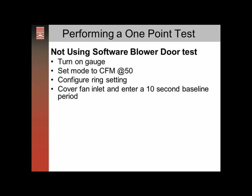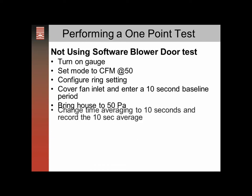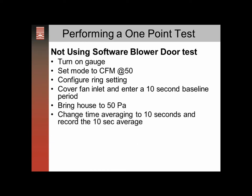Push baseline and on the B channel it'll be counting up to 10 seconds. Once it gets to 10, enter that baseline period. Then bring the house up to 50, then change the averaging period to 10 seconds.